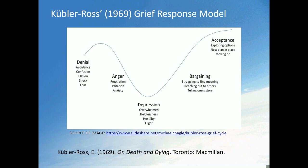For example, one person may be totally devastated by an injury, whilst another person with the same injury who has been underperforming may see the injury as an escape from or an excuse for that poor performance. Such an athlete is unlikely to demonstrate, for example, a period of depression, because they may actually be quite happy about being injured.